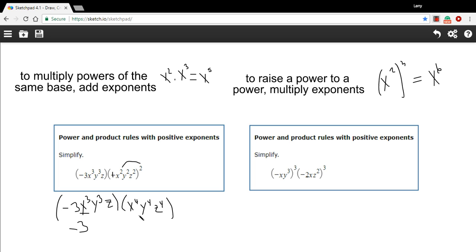Now, let's just take the x to the third times x to the fourth. This is the product rule, so we add the exponents. 3 plus 4 is 7, so that should be x to the seventh.